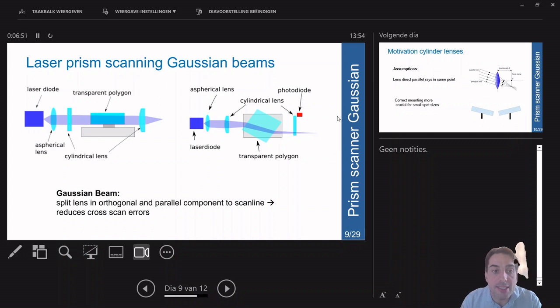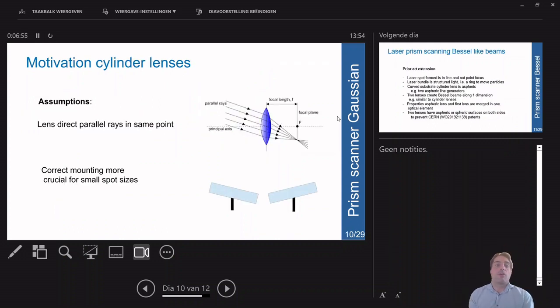What's very important is it reduces cross-scan errors. If your prism is not mounted correctly, when you move it around, it will also move upward and downward as you see in the lower right. Then your laser bundle will start to move orthogonal to the scan line.